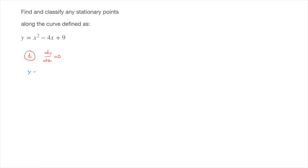We have y which equals x squared minus 4x plus 9. And so using the power rule for differentiation, we can differentiate this with respect to x, and we find that dy/dx is equal to 2x minus 4.